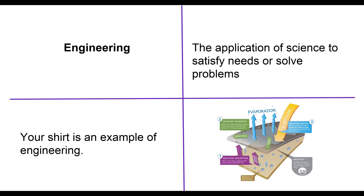The next word — our first 4.4 word — is engineering. We've talked about an engineer before; now we're talking about engineering as the actual process. Engineering is the application of science to satisfy needs or solve problems. An engineer uses science and technology to solve problems, and engineering is basically the process of doing that.